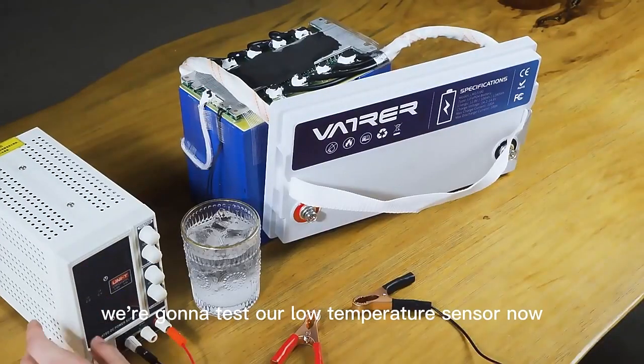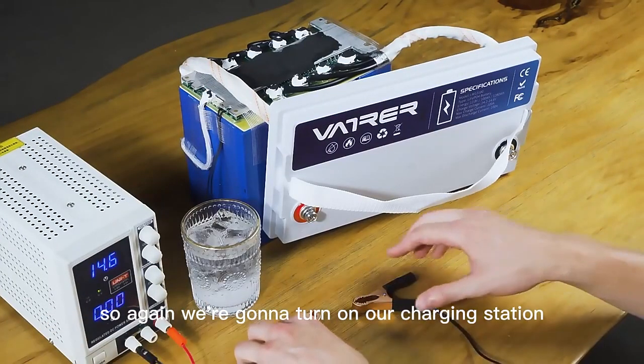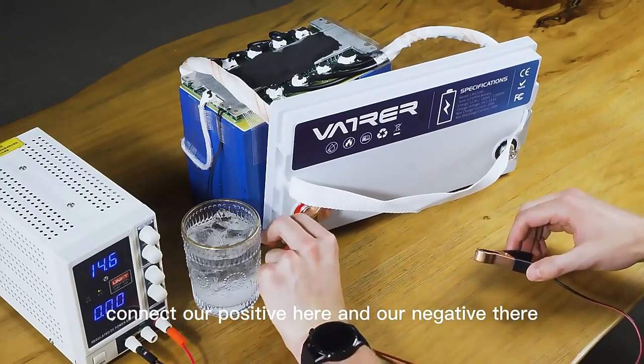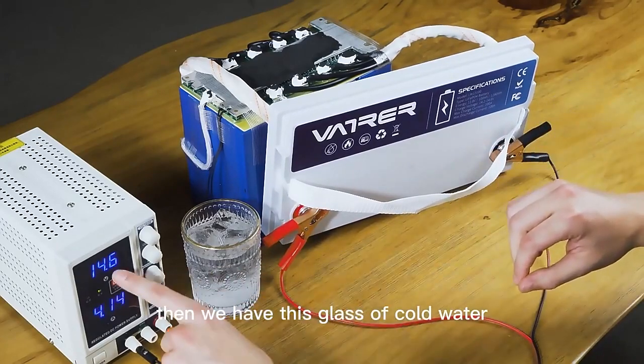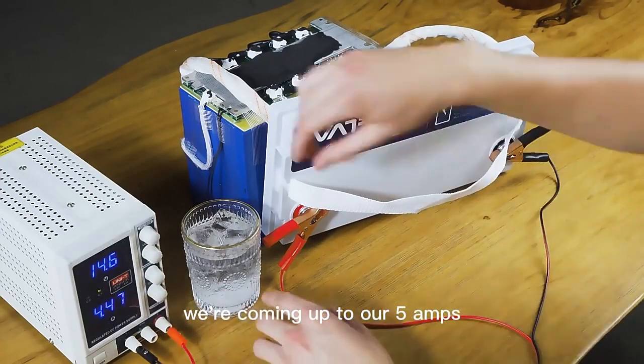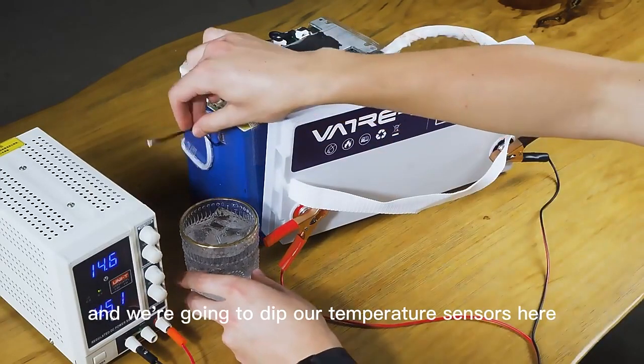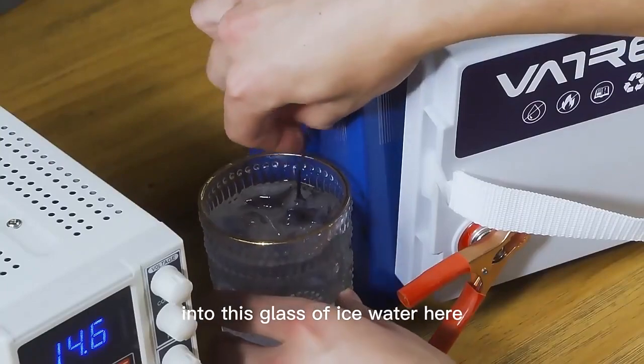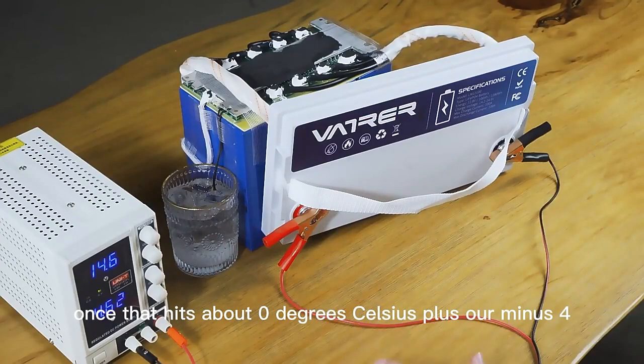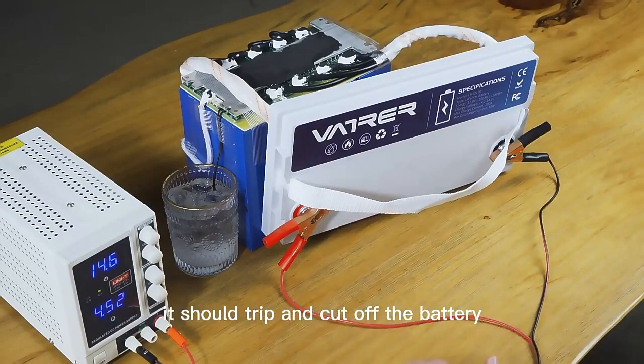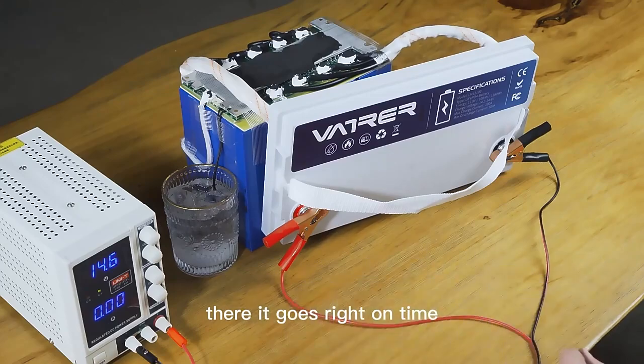All right, we're going to test our low temperature sensor now. So again, we're going to turn on our charging station, connect our positive here and our negative there. And then we have this glass of cold water. We're currently at 14.6 volts. We're coming up to our five amps. And we're going to dip our temperature sensors here into this glass of ice water. Once that hits about zero degrees Celsius, plus or minus 4, it should trip and cut off the battery. There it goes. Right on time.